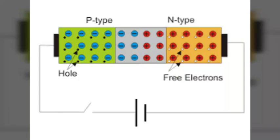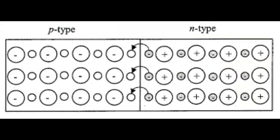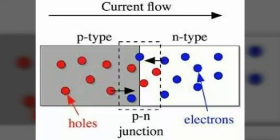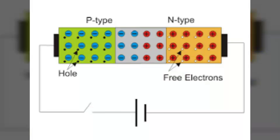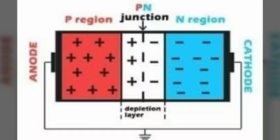Properties of P-N junction: at the instant of P-N junction formation, the free electrons near the junction in the N region begin to diffuse across the junction into the P region where they combine with holes near the junction. This creates a layer of positive charges (pentavalent ions) near the junction. As electrons move across, the P region loses holes. Where electrons and holes combine, a layer of negative charges (trivalent ions) forms near the junction. These two layers of positive and negative charges form the depletion region. The width of the depletion layer is very thin compared to the N and P regions.